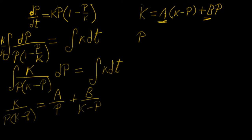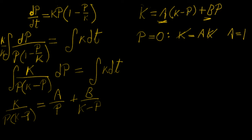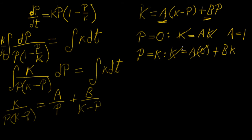We want to find a and b by choosing values of p that eliminate each constant one at a time. If we choose p equals 0, the b term goes to zero and p goes to zero as well, leaving us with a times k, so a equals 1. For the second constant, we make p equal to k so that the a term cancels out, leaving k equals b·k, so b equals 1. Now we have the expression 1 over p plus 1 over k minus p.